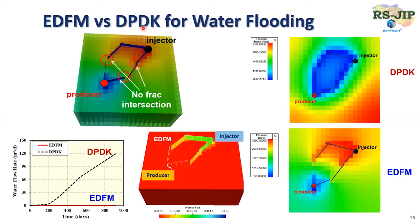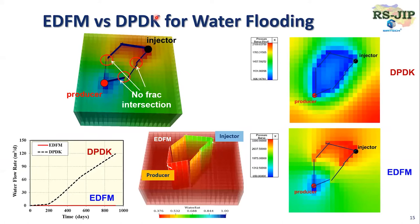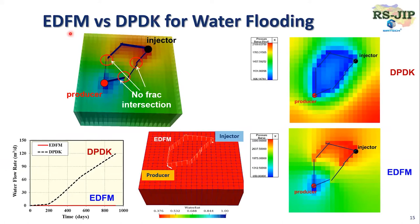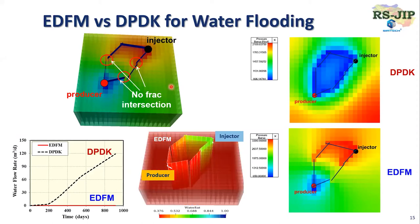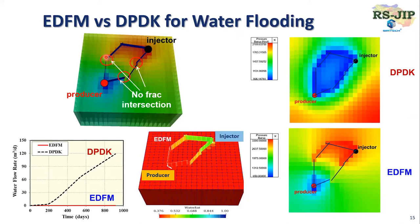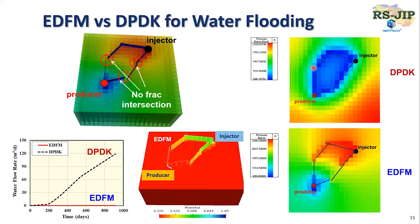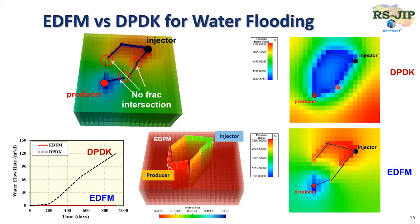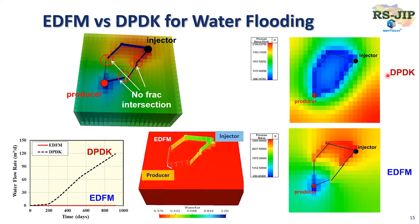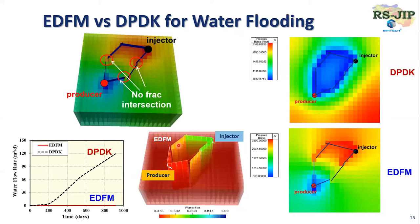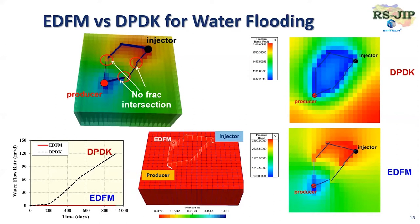If you work on naturally fractured reservoirs in conventional reservoir simulation, the first method you will think of is the DPDK method. I show a comparison between our EDFM and DPDK. I build a simple model with one injector and one producer where there is no fracture intersection between the fractures. We know the DPDK method will assume all fractures are connected to each other, so fracture connectivity will be overestimated. Using DPDK, water breakthrough will happen much earlier than with EDFM. EDFM will treat each fracture individually and accurately, so you cannot see water breakthrough because there is no fracture intersection.